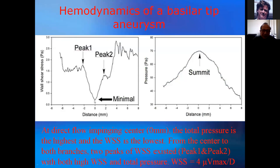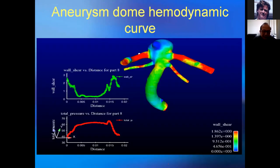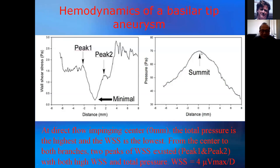Right at the blood flow impediment, the total pressure is maintained at 660 Pa, but the total pressure at the peak is very high at 70 Pa. We also suspected the aneurysm was initiated at one or two of these peaks, which correspond to very high total pressure.